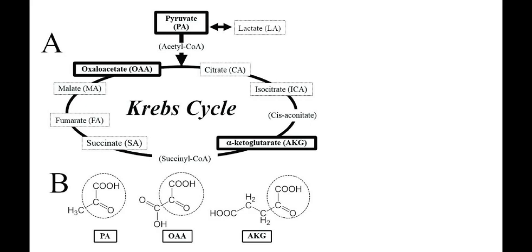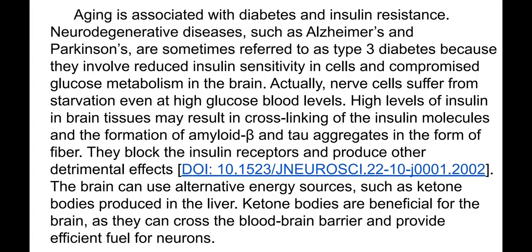Aging is associated with diabetes and insulin resistance. Neurodegenerative diseases such as Alzheimer's and Parkinson's are sometimes referred to as Type 3 diabetes because they involve reduced insulin sensitivity in cells and compromised glucose metabolism in the brain. Nerve cells suffer from starvation even at high glucose levels when they develop insulin resistance. High levels of insulin in brain tissues may also result in cross-linking of insulin molecules and formation of amyloid beta and tau aggregates in the form of fibers, which block insulin receptors and produce other detrimental effects on brain tissues.